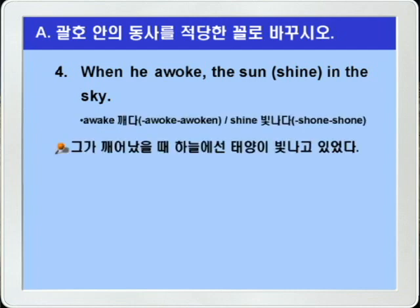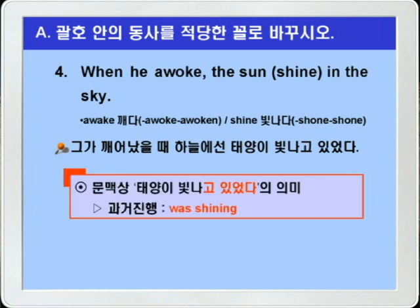awoke는 awake의 과거형이죠. awake, awoke, awoken 이렇게 변합니다. 뜻은 자동사로 '깨다', 타동사로는 '깨우다' 이런 의미인데, 여기서는 자동사로 쓰였습니다. 그리고 shine하면 '빛나다' 이런 의미로, 과거와 과거분사형이 모두 shone으로 똑같습니다. 해석을 해보면, 'when he awoke' 그가 깨어났을 때, 'the sun shine in the sky' 하늘에선 태양이 빛나고 있었다. 이런 의미가 되니까, 정답은 shine을 과거진행형인 was shining으로 고치면 되겠습니다.